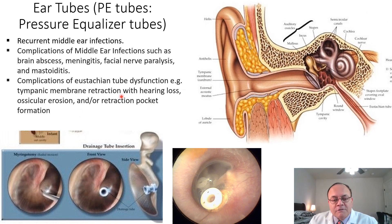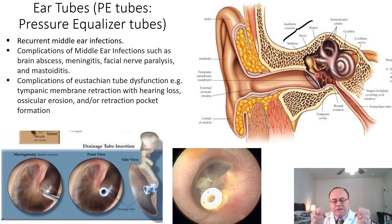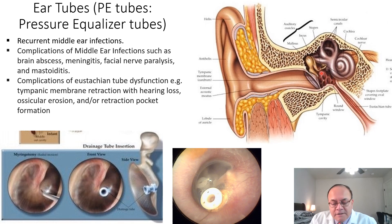Complications of eustachian tube dysfunction — that is, dysfunction of the tube running from the middle ear to the nose — include tympanic membrane retraction, where the membrane is pulled inwards with associated hearing loss, and ossicular erosion, where the bone gets eaten away. Negative pressure, though gradual over time, can become intense enough to pull the membrane inward in the form of a pocket, which eventually forms a cholesteatoma.